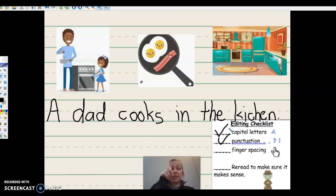And now I need to make sure there is space between my words. So you're going to take your finger and put it in between every word as we read to make sure there is space. A dad cooks in the kitchen. All right, I have space between my words. If you do not, please use your eraser and make some space between your words.